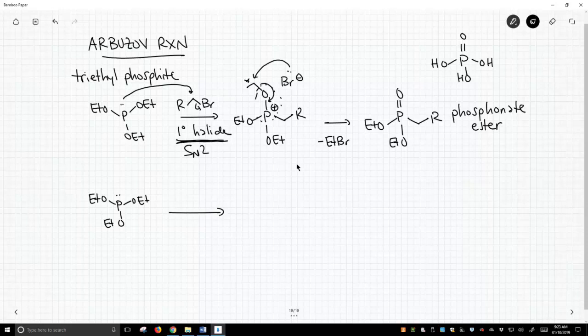So we might do something like this. Maybe an alpha-chloroester. And so esters are electron withdrawing groups with that carbonyl. And so when we do our reaction, when we make our phosphonate ester, we get something that looks like this. Doesn't have to be this ethyl ester, but some kind of electron withdrawing group.